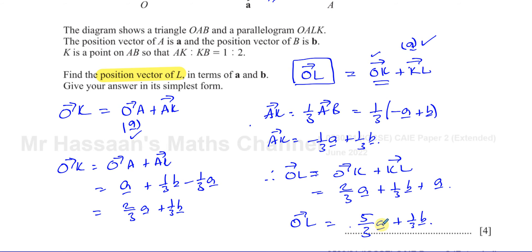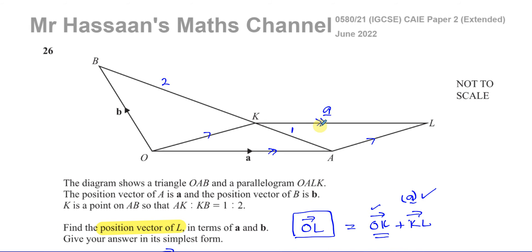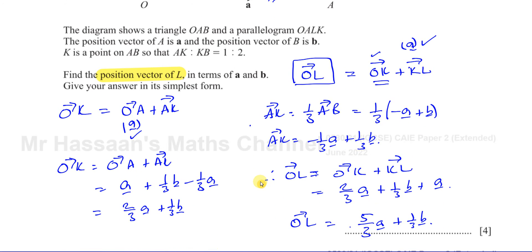There we have the answer for this question — a little involved but just following the principles of vectors. Two vectors are the same if they are parallel and the same length, and as OALK is a parallelogram, KL equals vector A. Going from O to K means going O to A then A to K, which is one third of AB. That gives the final answer.